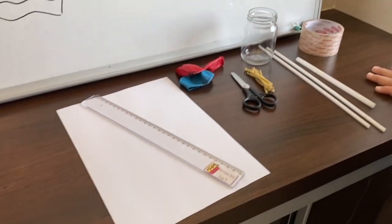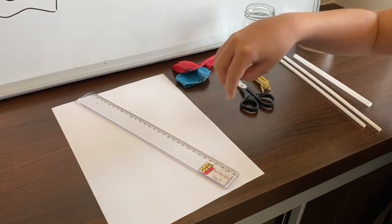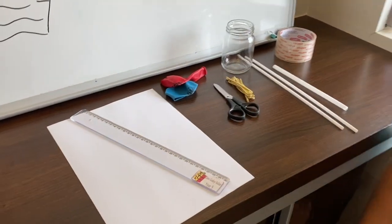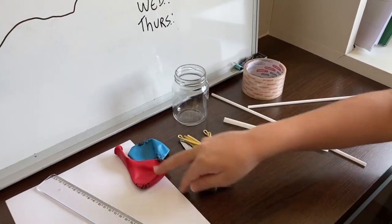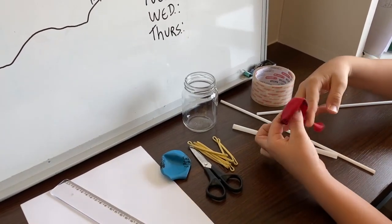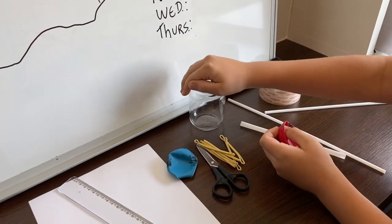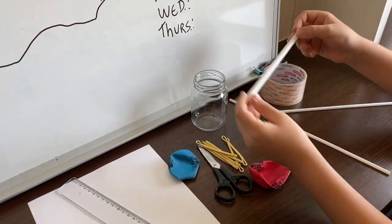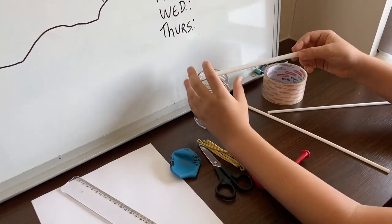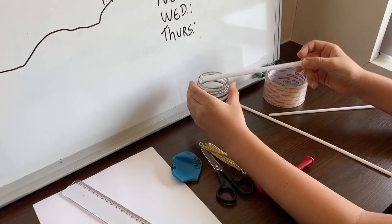Scissors, paper, and ruler. So now we're going to use the balloon. Cut it and use the part without the neck so we can cover this part and use the straw because the balloon is sensible to the air pressure.